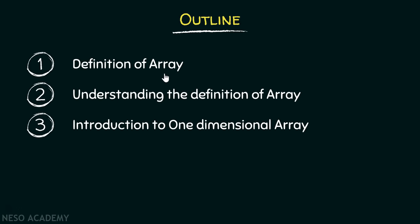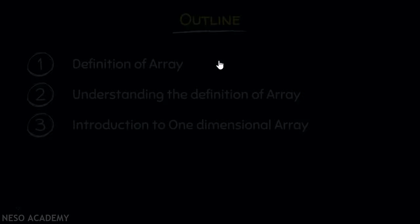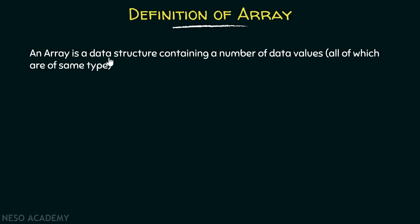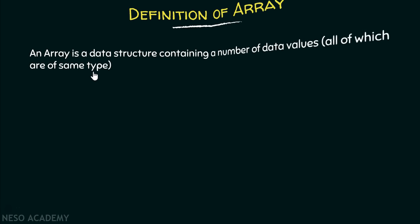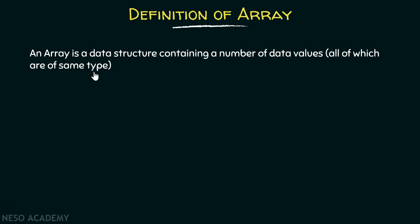Let's get started with the definition of array. An array is a data structure containing a number of data values, all of which are of the same type. In order to understand this definition, I will divide it into three parts. First, I will tell you what a data structure is all about.